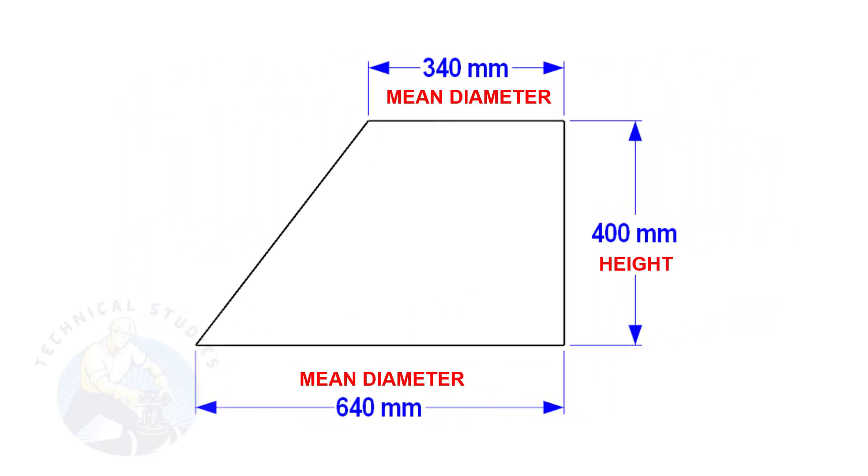In this layout, the bottom and top mean diameters are 640mm and 340mm respectively, and the height is 400mm.